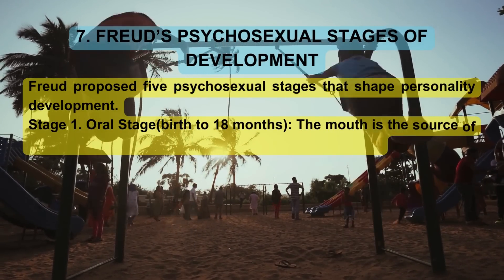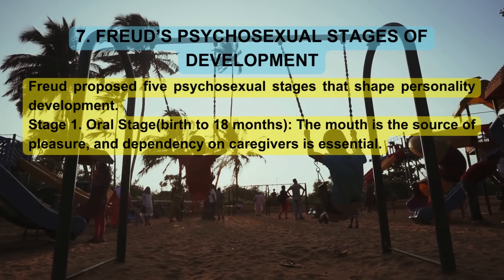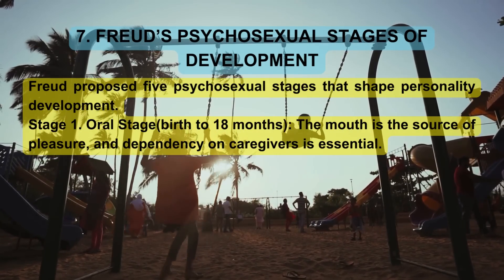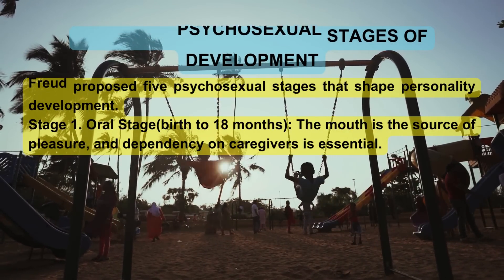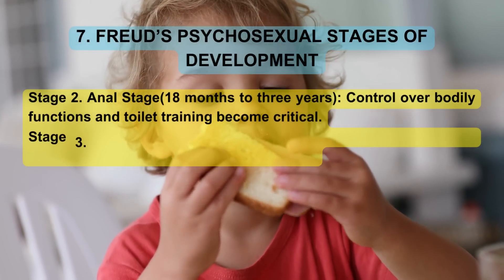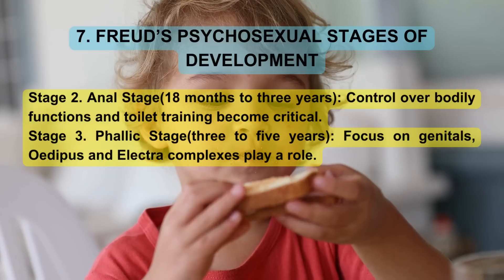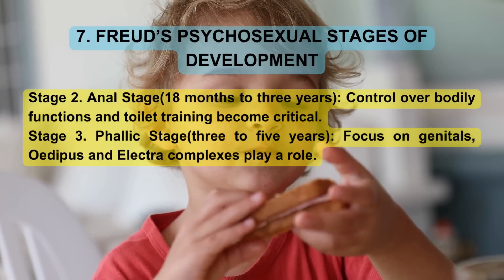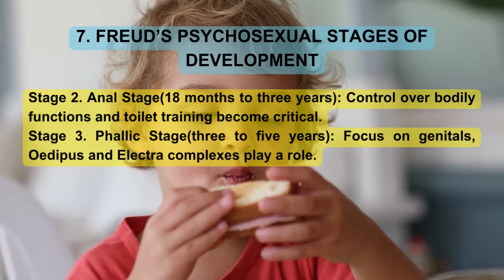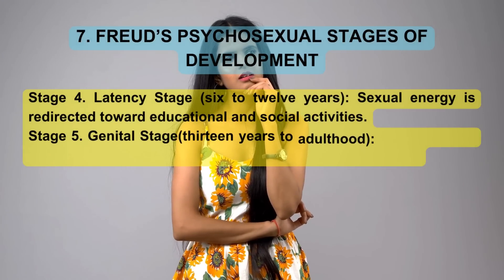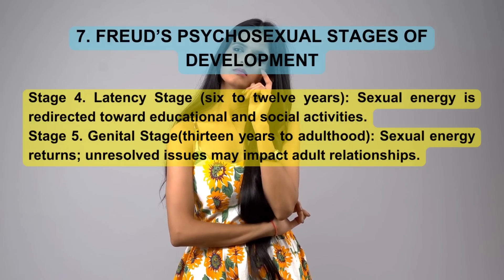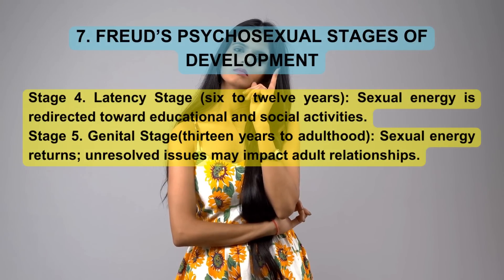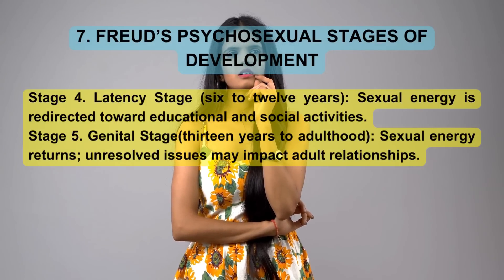Freud's psychosexual stages of development. Freud proposed five psychosexual stages that shape personality development. Stage 1: Oral stage (birth to 18 months) — the mouth is the source of pleasure, and dependency on caregivers is essential. Stage 2: Anal stage (18 months to 3 years) — control over bodily functions and toilet training become critical. Stage 3: Phallic stage (3 to 5 years) — focus on genitals; Oedipus and Electra complexes play a role. Stage 4: Latency stage (6 to 12 years) — sexual energy is redirected toward educational and social activities. Stage 5: Genital stage (13 years to adulthood) — sexual energy returns, and unresolved issues may impact adult relationships.